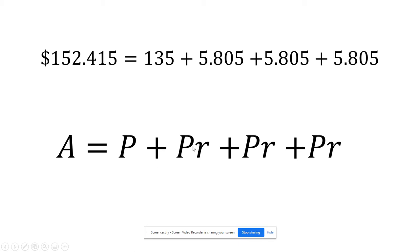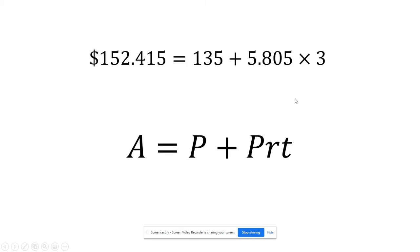We started with our principal. We added P times R three times. And a quicker way of writing that is just to say P times R times 3, or in general, T for however long you want. If it's three years, T would be 3. If it's another time frame, you would put whatever the number of years that passed by. And so that is our formula for the end balance for simple interest.